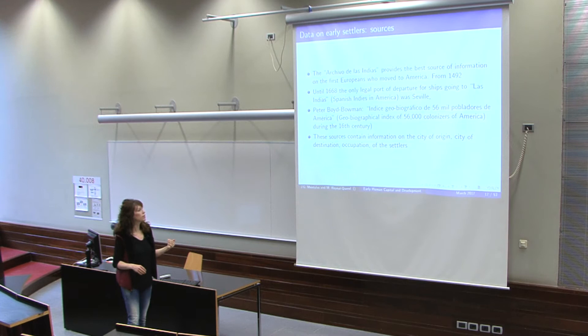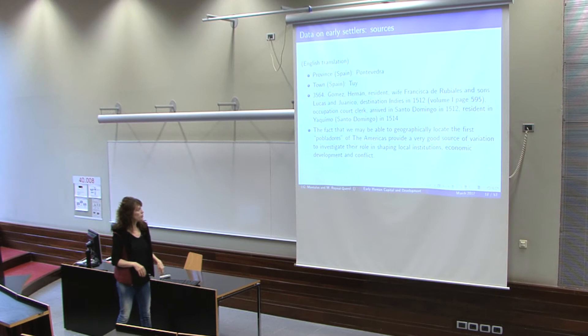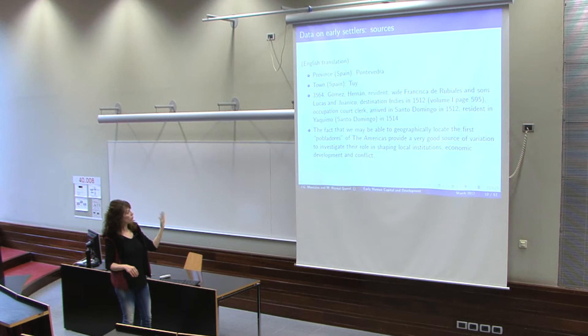He produced the geographical index of 56,000 colonizers of America, with city of origin, place of destination, the city in which they died in Latin America, occupation, and so on. For example, one entry reads: Hernan Gómez, from Tau II in Pontevedra, first arrived in Las Indias in 1512, but then finally moved to Iaquimo in 1514. So this person's destination is recorded as Iaquimo in 1514.